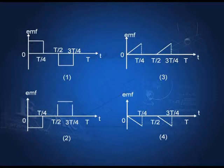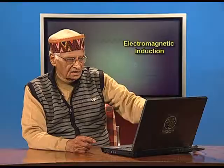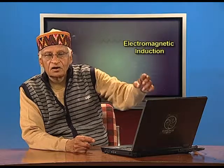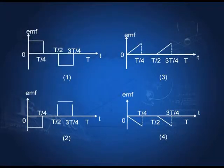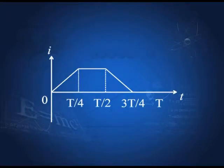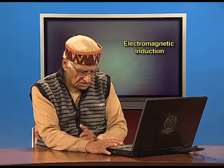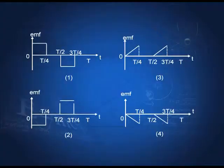From 0 to T/4, the current increases constantly, producing a steady induced EMF in one direction. From T/4 to T/2, the current is constant, so the flux is steady and the induced EMF is zero. From T/2 to 3T/4, the current decreases constantly, and because the flux is decreasing, an EMF is produced — but since ε = −dΦ/dt, when flux decreases the EMF reverses direction.